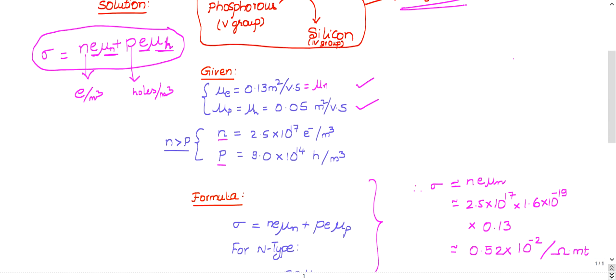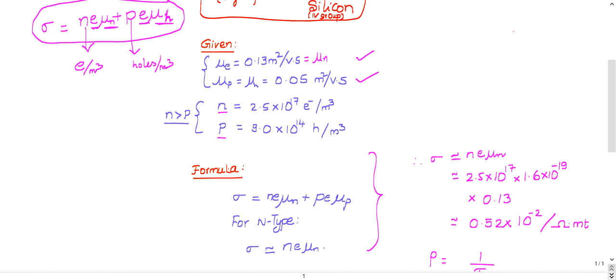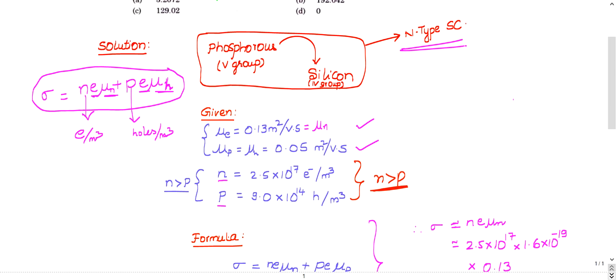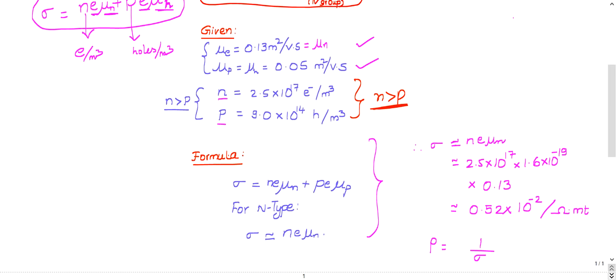It's given that this is an n-type semiconductor. From the data you can also conclude that electron density is greater than hole density. Whenever n is greater than p, it may look simple, but when n is 10³ times greater, that matters in calculations.